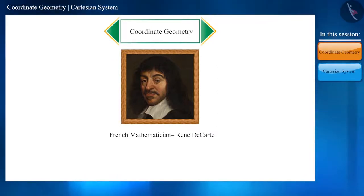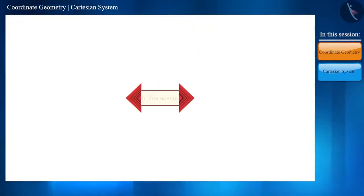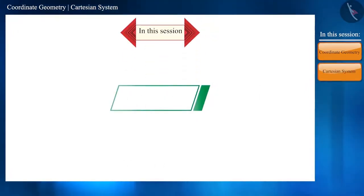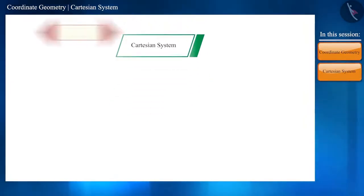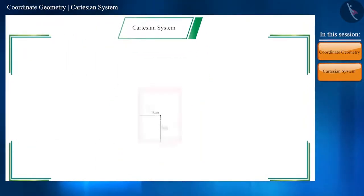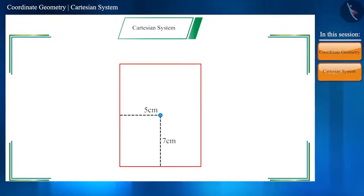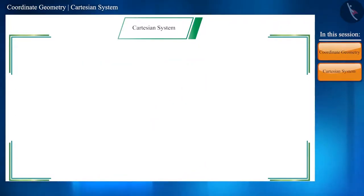In this session, we'll discuss about the Cartesian system in detail. As we have seen, two directions are required to understand the position of a point in a plane. In the Cartesian system, two number lines are perpendicular to each other.